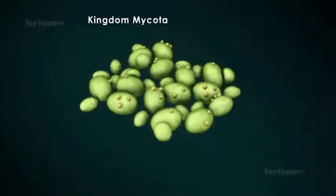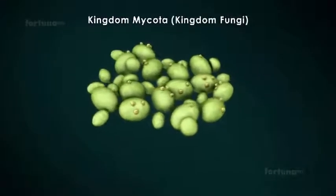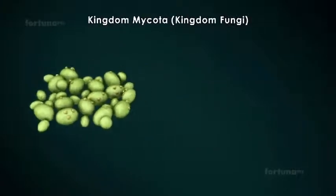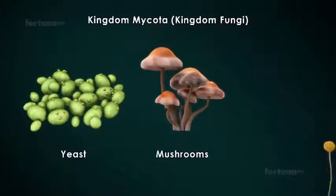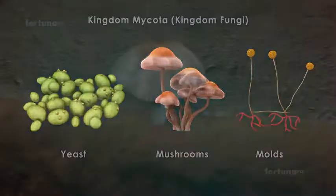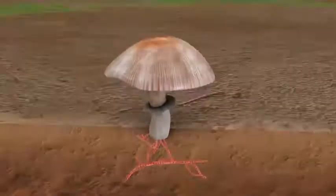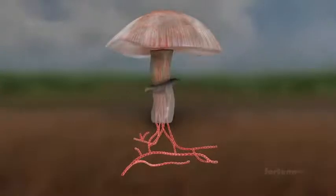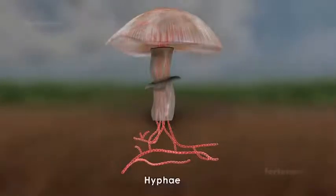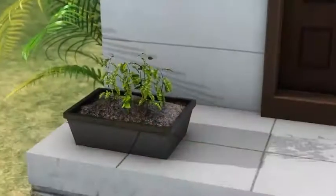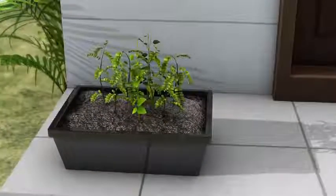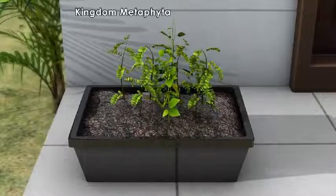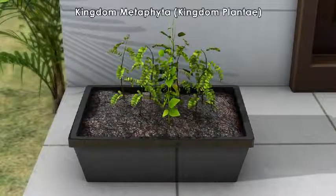Kingdom Mycota, also called Kingdom Fungi, includes fungi such as yeast, mushrooms, and molds. The body of a fungus is made of long thread-like structures called hyphae. Its members can be free-living, parasitic, or symbiotic.